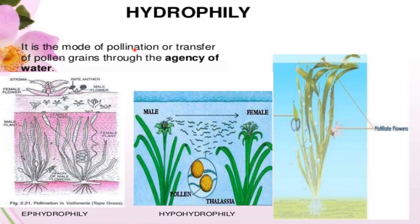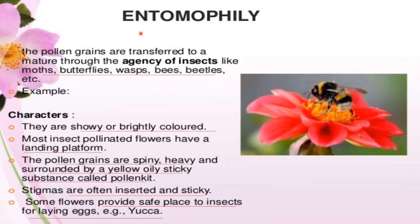Hydrophily is a mode of pollination involving transfer of pollen grains through the agency of water. Examples are Zostera and Vallisneria. Characteristics: flowers are small and inconspicuous, nectar and odor are absent, pollen grains are light and unwettable due to the presence of a mucilage cover, and stigma is long and sticky but unwettable.